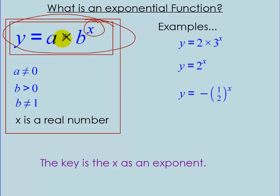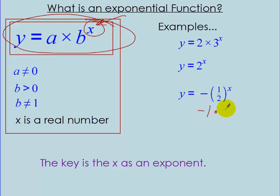So x is not just a number being multiplied — we're taking a number b and raising it to the x power. That's what makes it exponential: x is in the exponent. Some examples are y equals 2 times 3 to the x power, y equals 2 to the x power (where a is 1), or y equals negative one-half to the x power, which is like negative 1 times one-half to the x power.